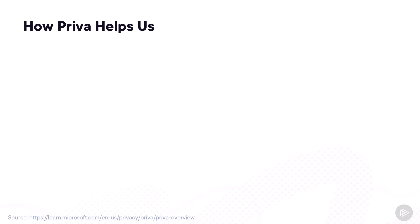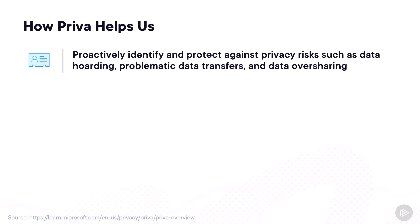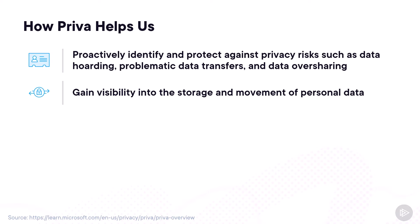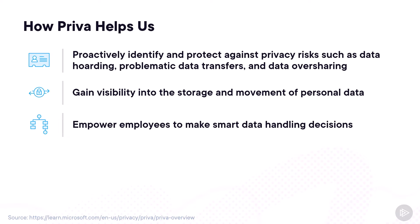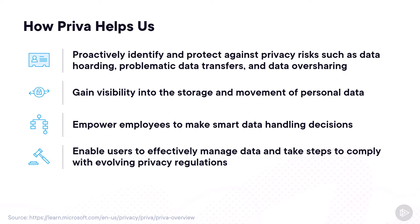Diving into how Priva helps us: first, it proactively identifies and protects against privacy risks such as data hoarding, problematic data transfers, and data oversharing. It will help us gain visibility into the storage and movement of personal data. It also empowers employees to make smart data-handling decisions, truly enabling business users to do more without having the compliance and privacy team take 100% of the task. Finally, Priva helps us manage subject rights requests at scale instead of manually doing each one of them.